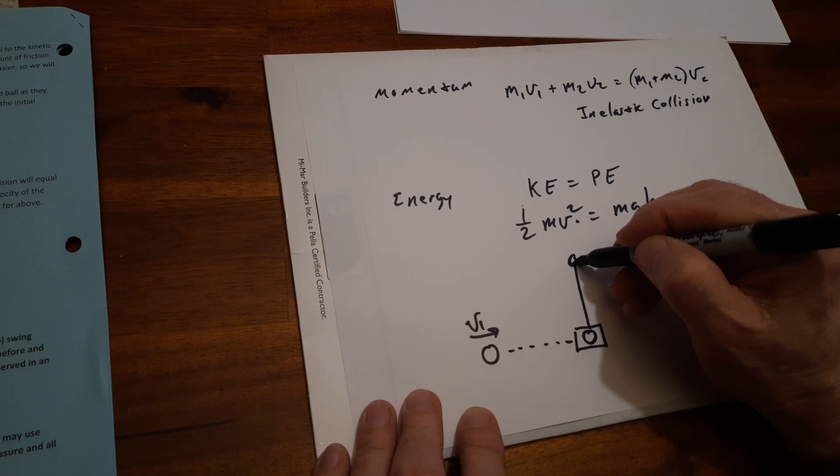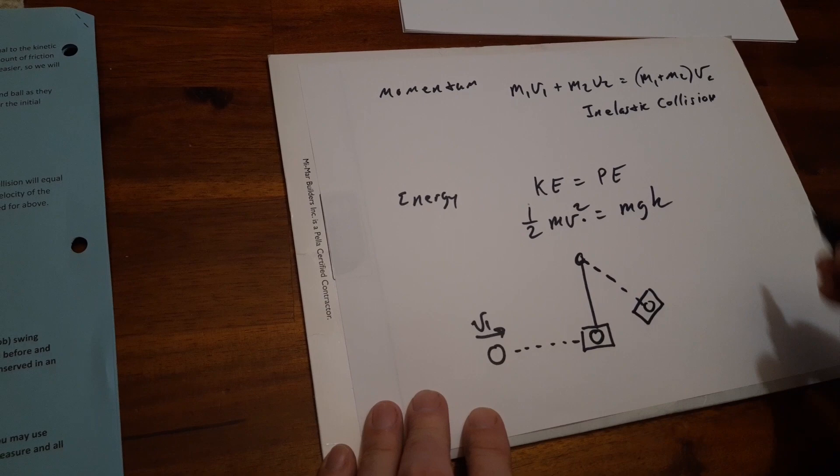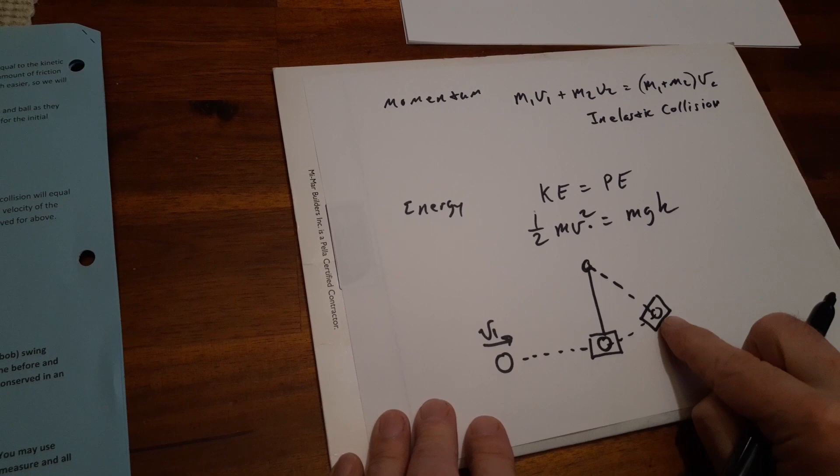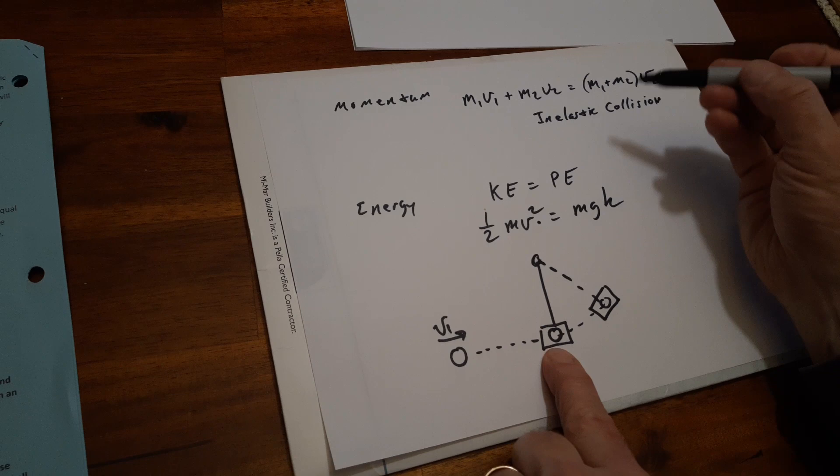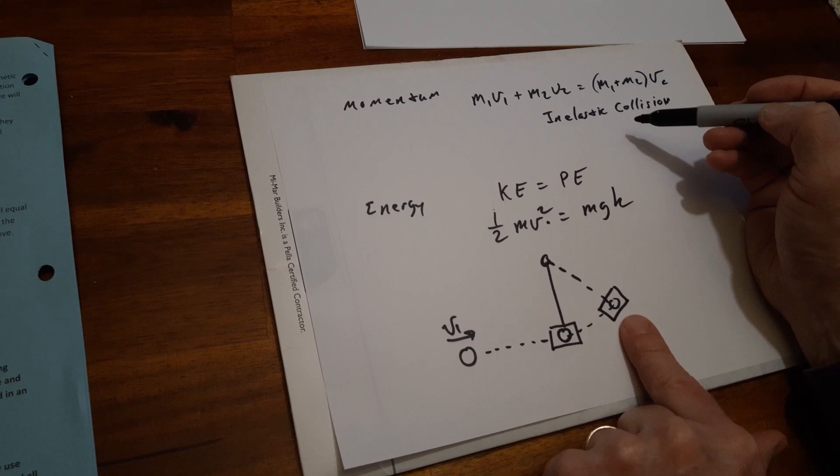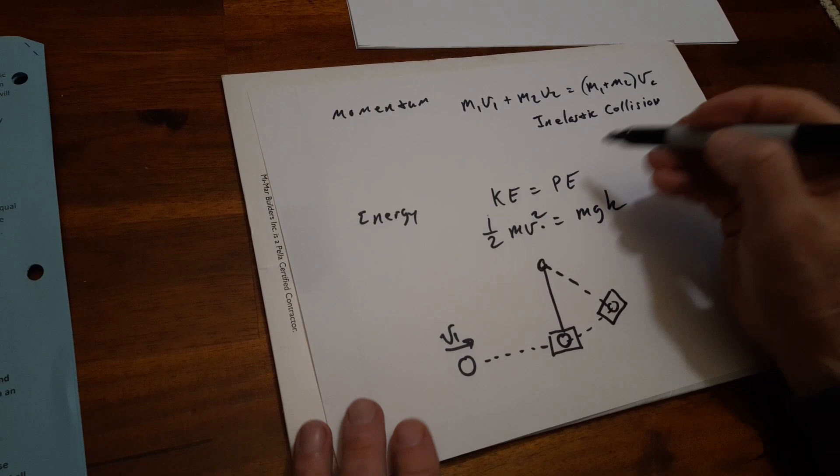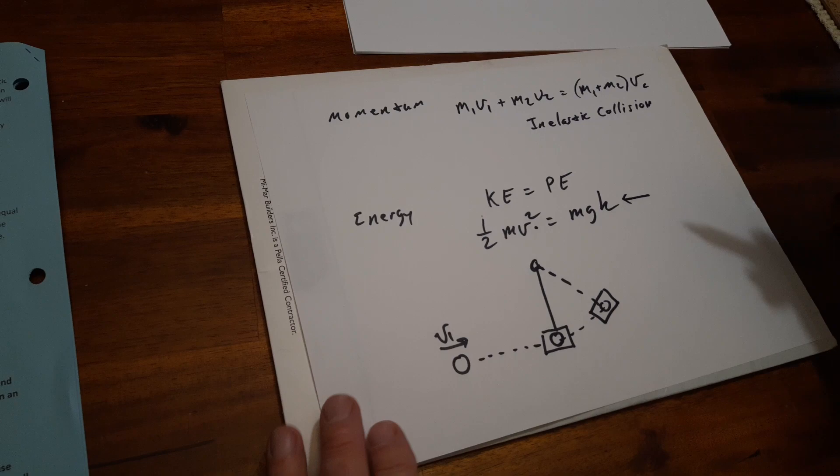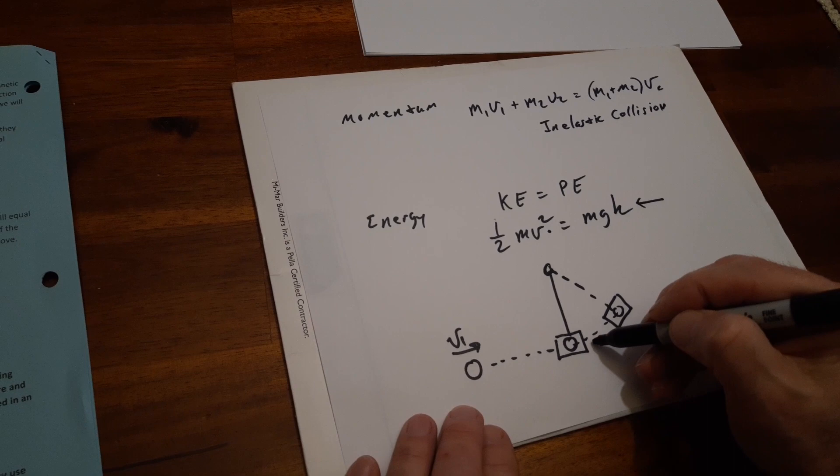That's going to drive the pendulum to an arc to the point where it stops. In the beginning we have max velocity, no height. At its upper peak of arc, no velocity, all height. So when these three equations equal each other is basically at the beginning and the end. And of course the end is going to be the height.